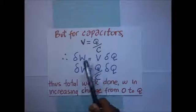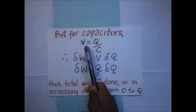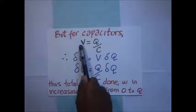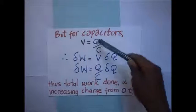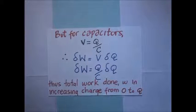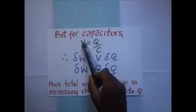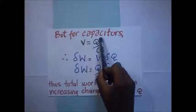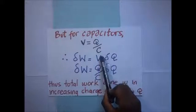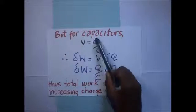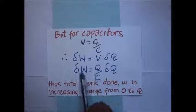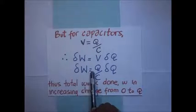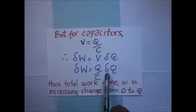For capacitors, we know that the potential difference V between the plates is equal to q over C. So we substitute for V in this expression, and we get: small work done equals q over C times dq.